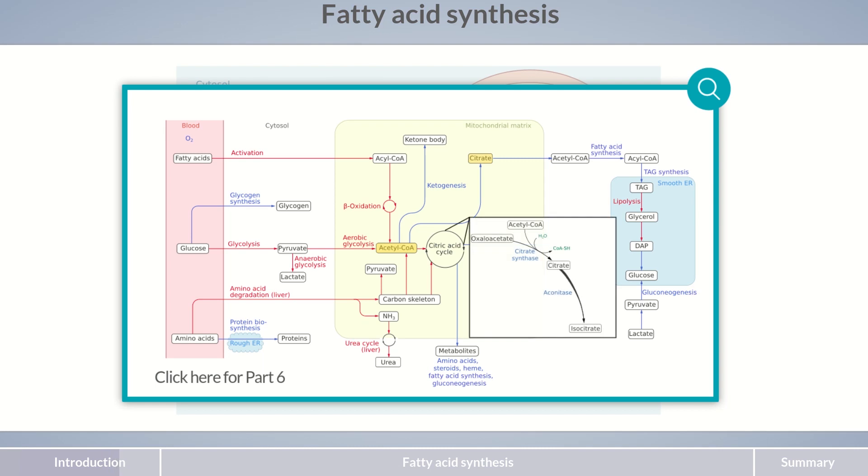The following reaction step, the conversion of citrate into isocitrate, is the bottleneck of the citric acid cycle. That's why an excess of energy leads to an accumulation of citrate, and subsequently, of acetyl-CoA.